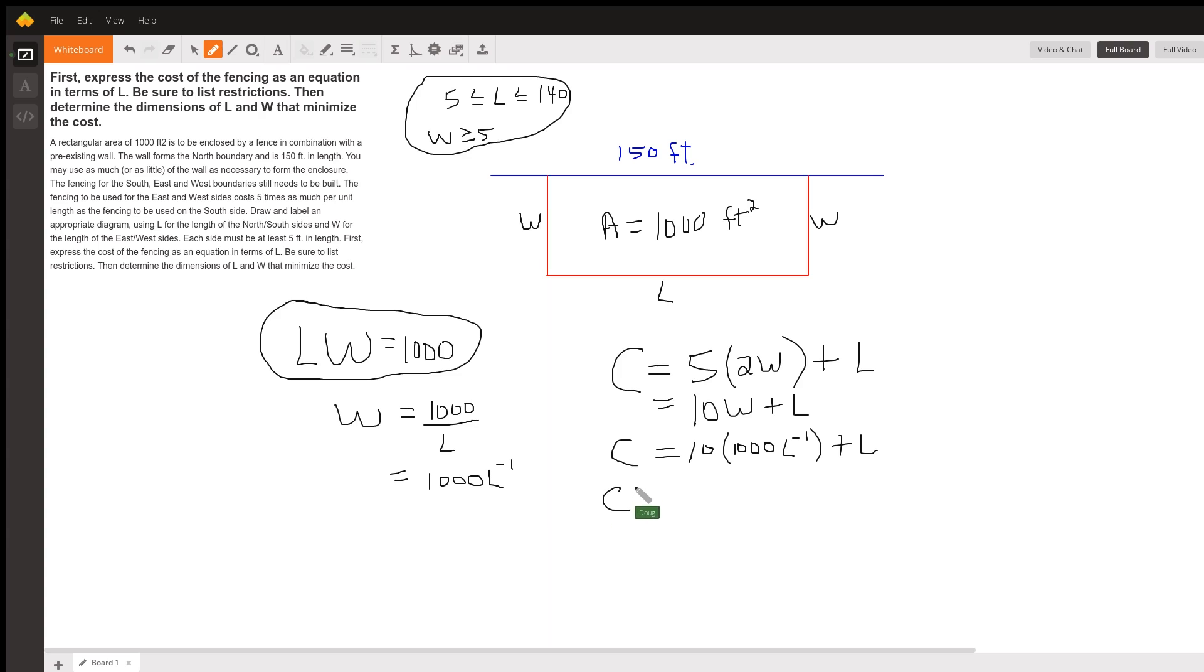So I'll just call it C prime. And we can picture this as 10,000 L to the minus one. So by the power rule, minus 10,000 L to the minus two plus the derivative of L is one. Set that equal to zero.